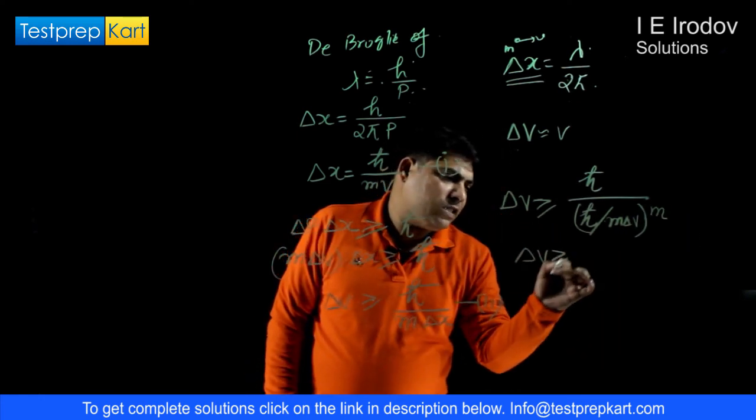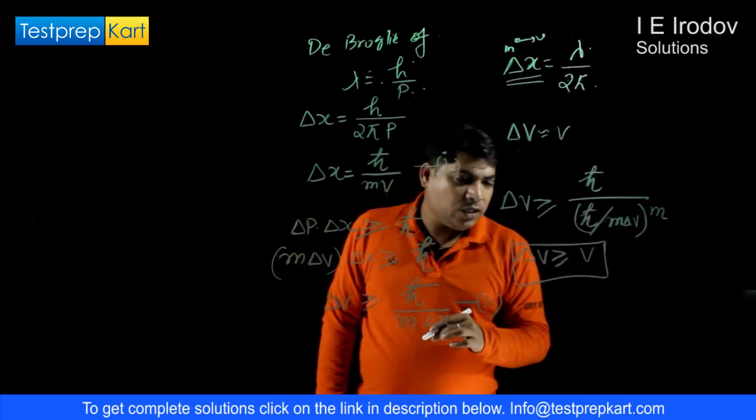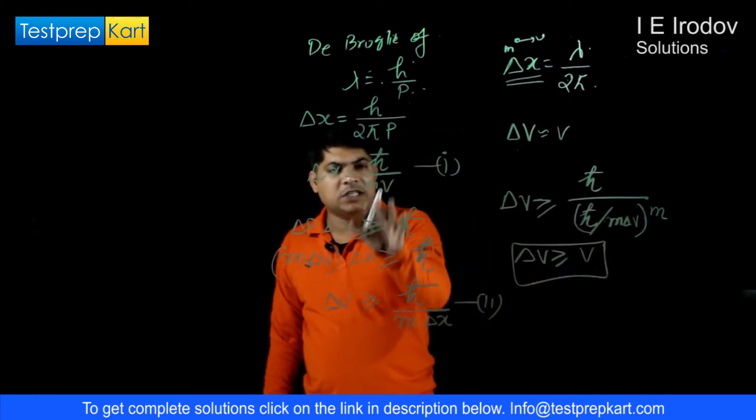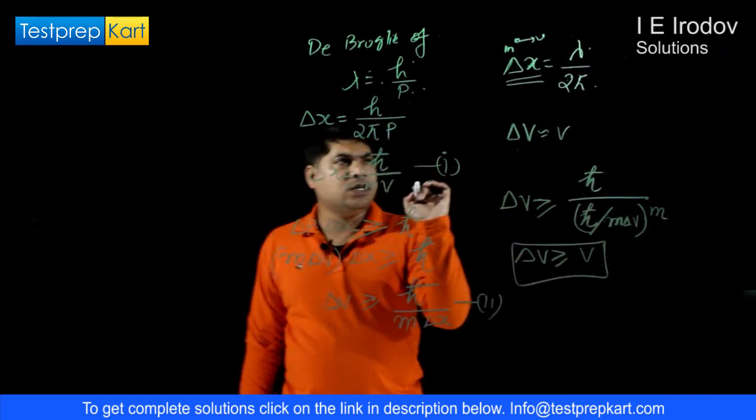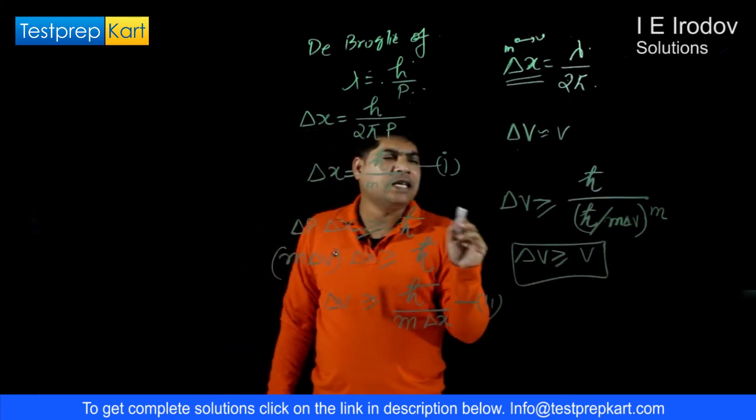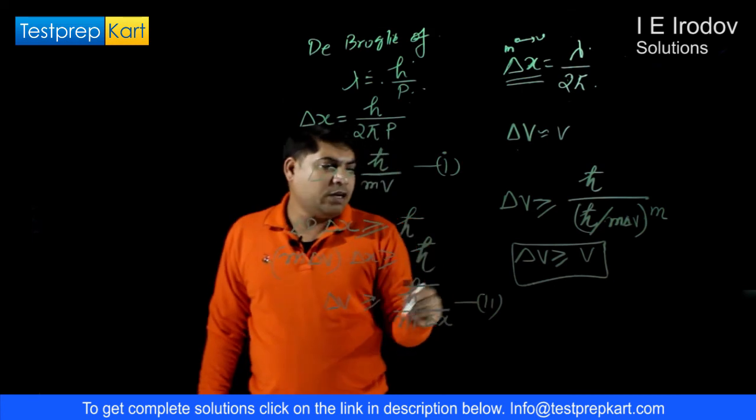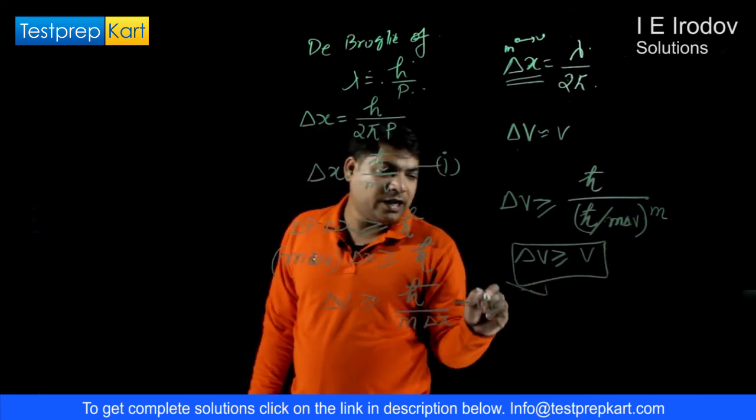From here we will get delta v is greater or equals to v. So now we can conclude from this mathematical explanation that if a particle have position uncertainty as lambda over 2 pi where lambda is de Broglie wavelength, then velocity uncertainty will be equivalent to velocity of particle itself.